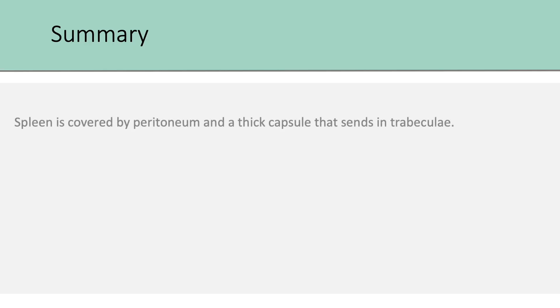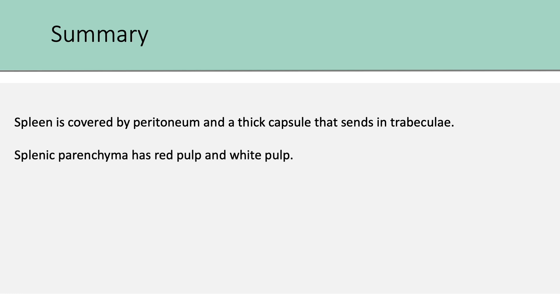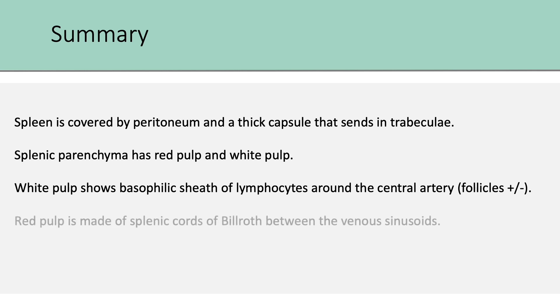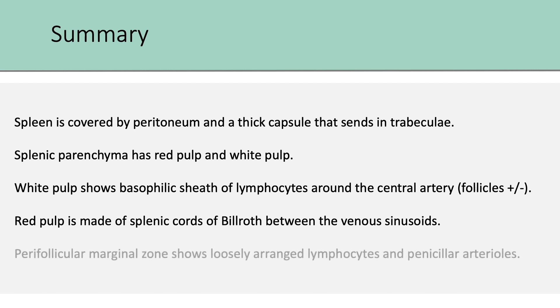To quickly recall what we have seen so far: spleen is covered by peritoneum and a thick capsule that sends in trabeculae. Splenic parenchyma has red pulp and white pulp. The white pulp shows a basophilic sheath of lymphocytes around the central artery, with or without the formation of primary or secondary follicles. Red pulp is made up of splenic cords of Billroth between the venous sinusoids. The perifollicular marginal zone shows loosely arranged lymphocytes and penicillar arterioles.